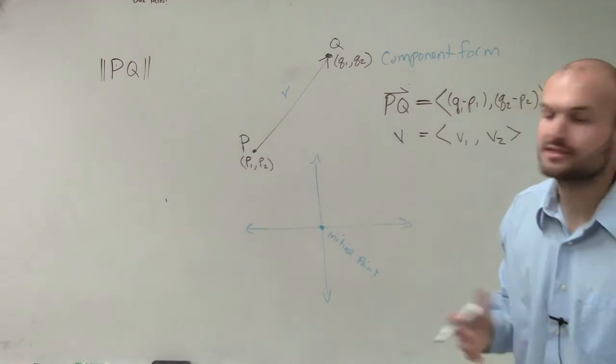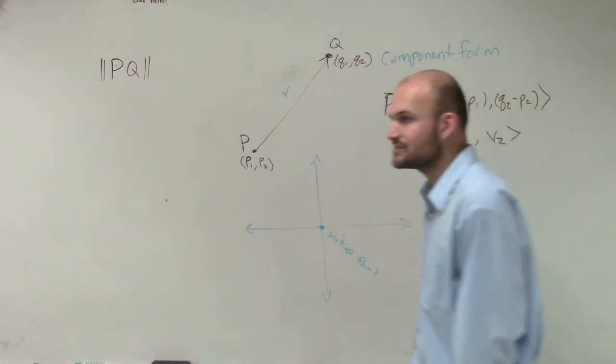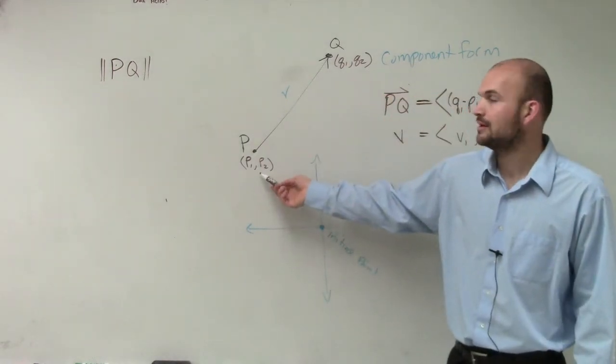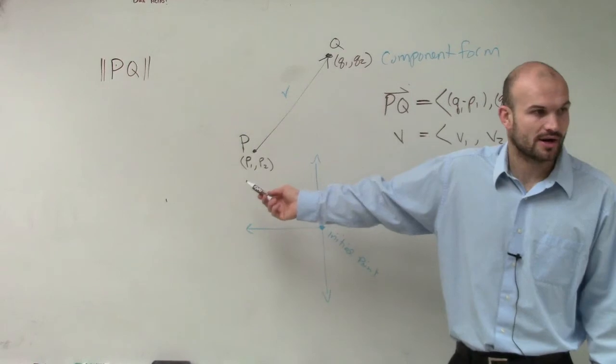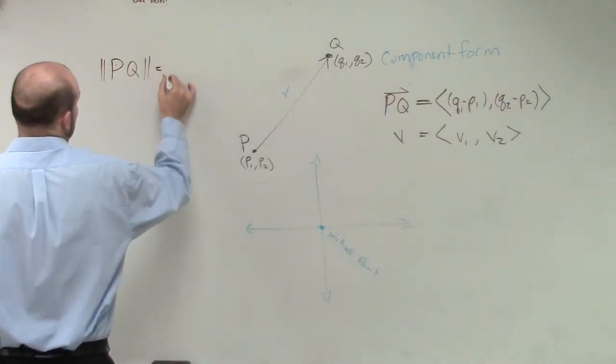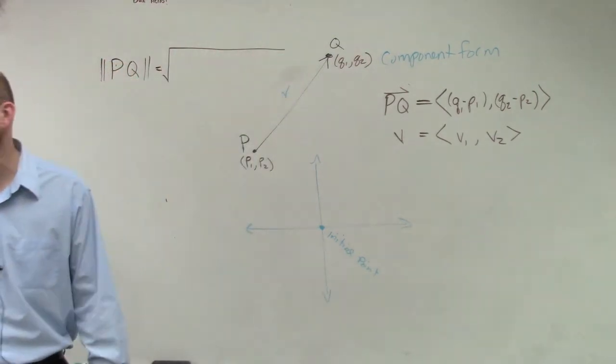The magnitude is going to be pretty much the distance formula. If you remember the distance formula, it's the square root of your change in x-coordinate squared plus your change of y-coordinate squared. This is from your lovely geometry teachers who talked to you about the distance formula.